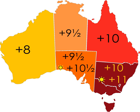Western Standard Time UTC+8: Western Australia, Standard Time Act 2005. Central Standard Time UTC+9:30: South Australia, Standard Time Act 2009 and Daylight Saving Act 1971; Northern Territory, Standard Time Act 2005. Eastern Standard Time UTC+10: Queensland, Standard Time Act 1894; New South Wales, Standard Time Act 1987 No. 149; Australian Capital Territory, Standard Time and Summer Time Act 1972; Victoria, Summer Time Act 1972; Tasmania, Standard Time Act 1895 and Daylight Saving Act 2007.